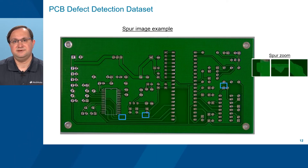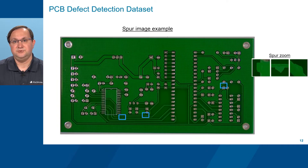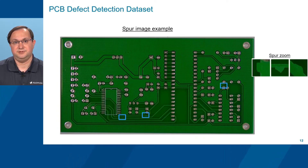The dataset's fifth defect class is spur, which dissipates the flow of electrical signals through copper line traces by spuriously increasing their area. You can see several examples of spur ROIs annotated in blue.